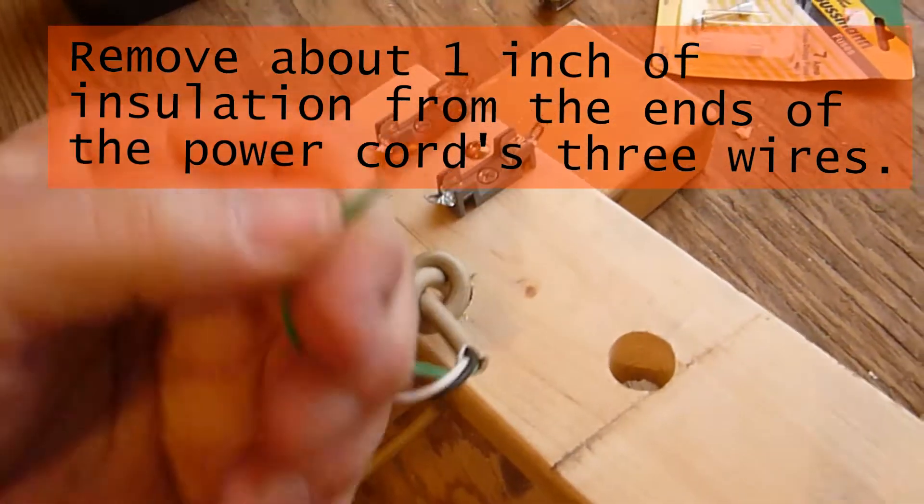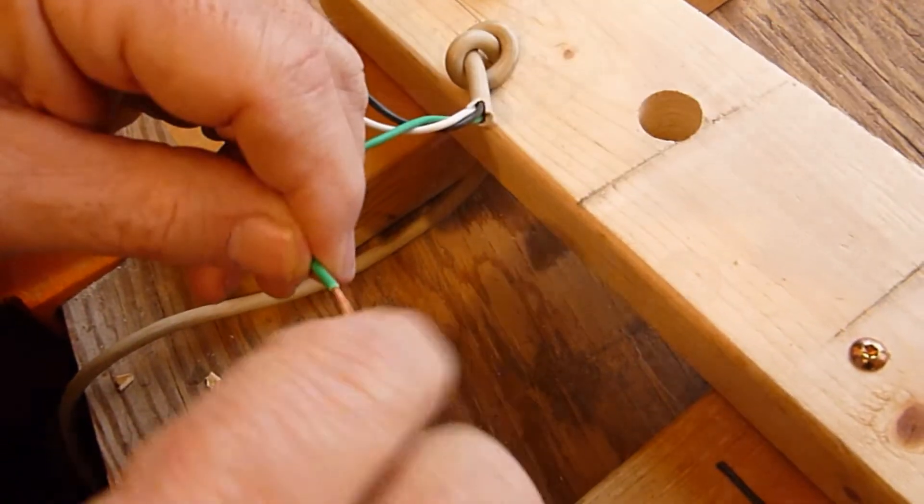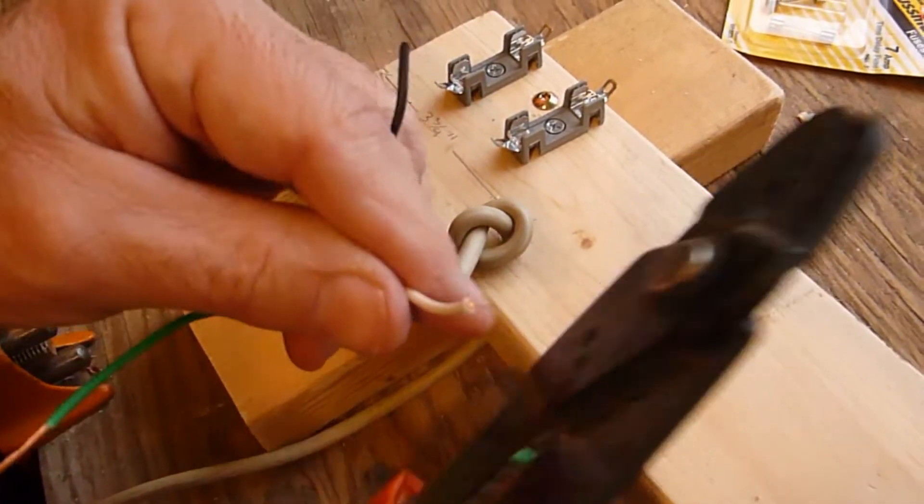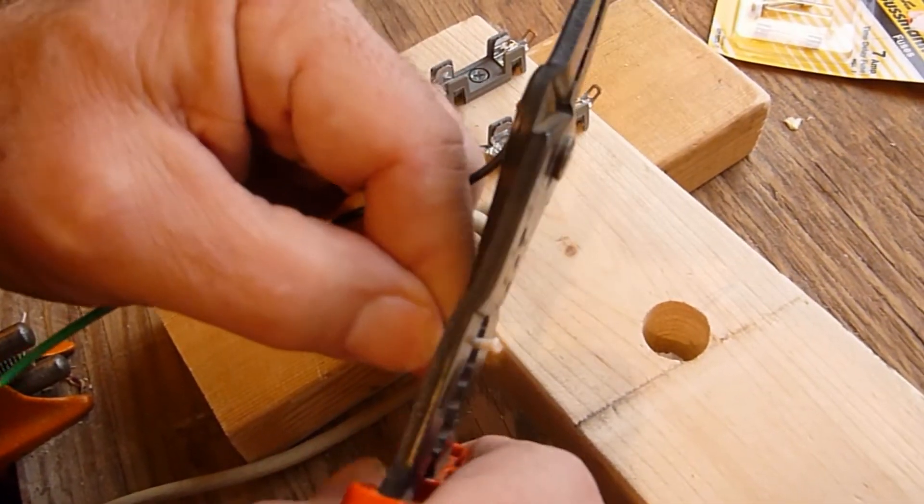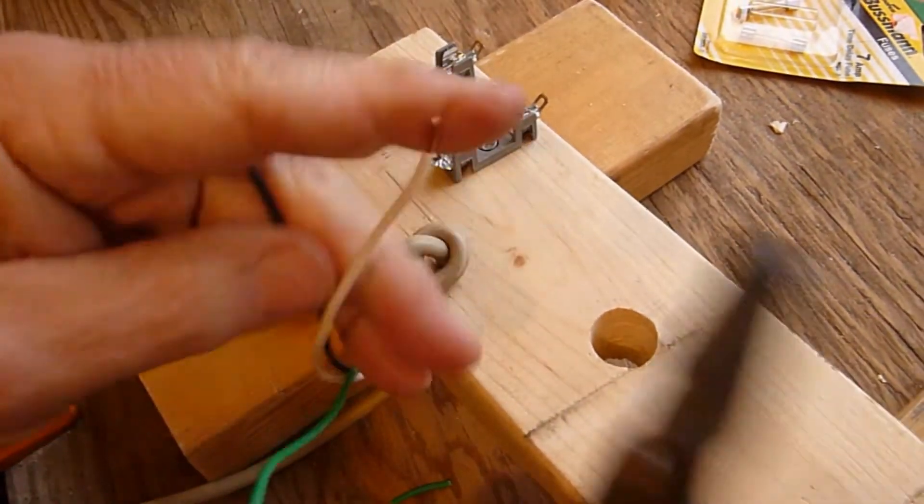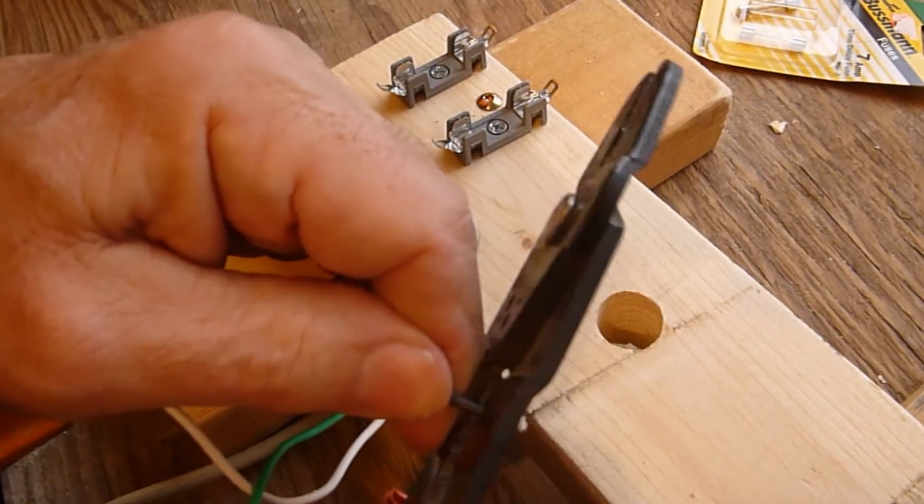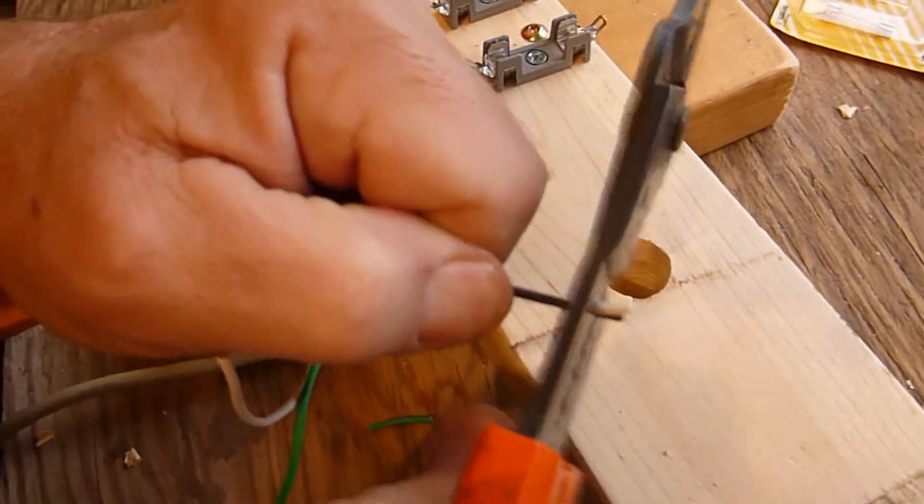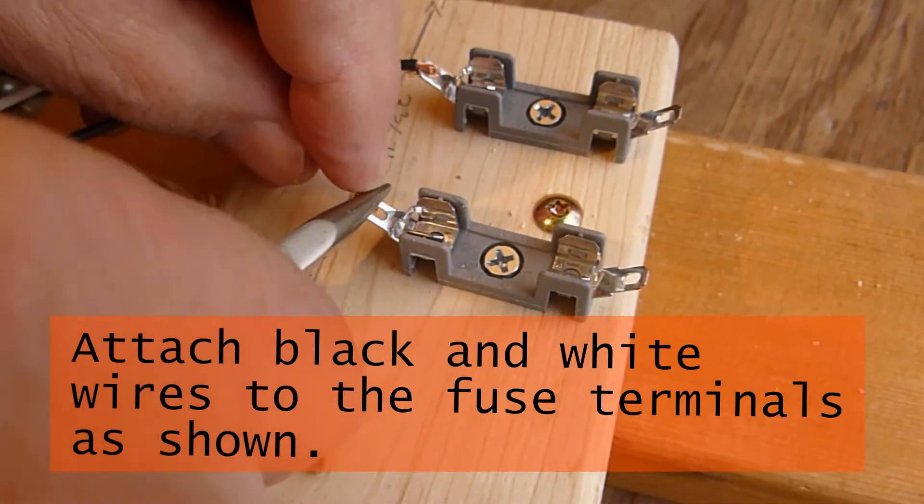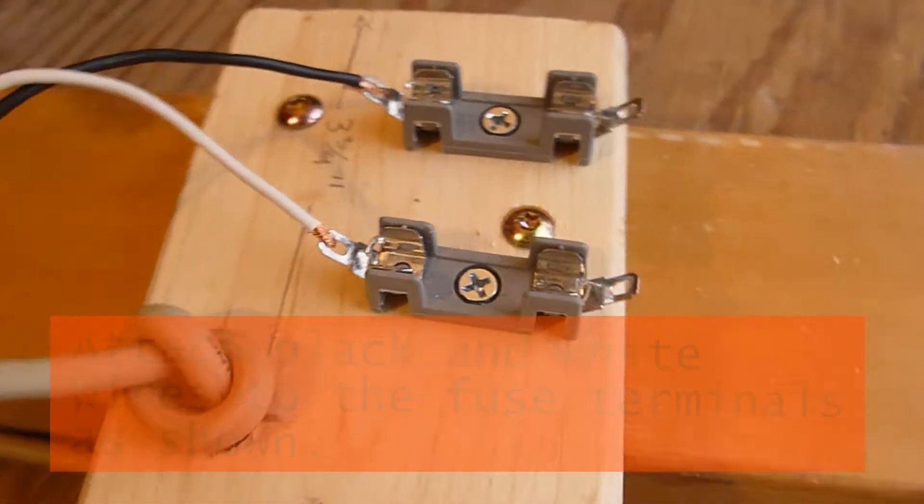Remove about an inch of insulation from the power cord's 3 wires. After you remove the outer insulation it's also a good idea to twist those fine wires together so they'll be easier to solder to the fuse holders. Attach and solder the black and white wires to the fuse terminals.